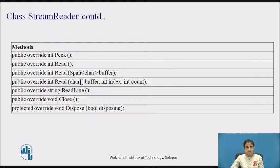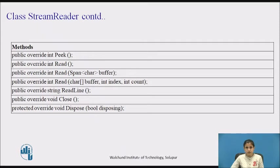The next Read method accepts one parameter, a buffer, and reads characters from the current stream into a span. It returns an integer representing the number of characters read, or 0 if the end of the stream is reached and no data was read. The next Read method has three parameters: buffer, index, and count. It reads a specified maximum number of characters from the current stream into the buffer beginning at the specified index. The index parameter specifies where to begin writing in the buffer, and count is the maximum number of characters to read.